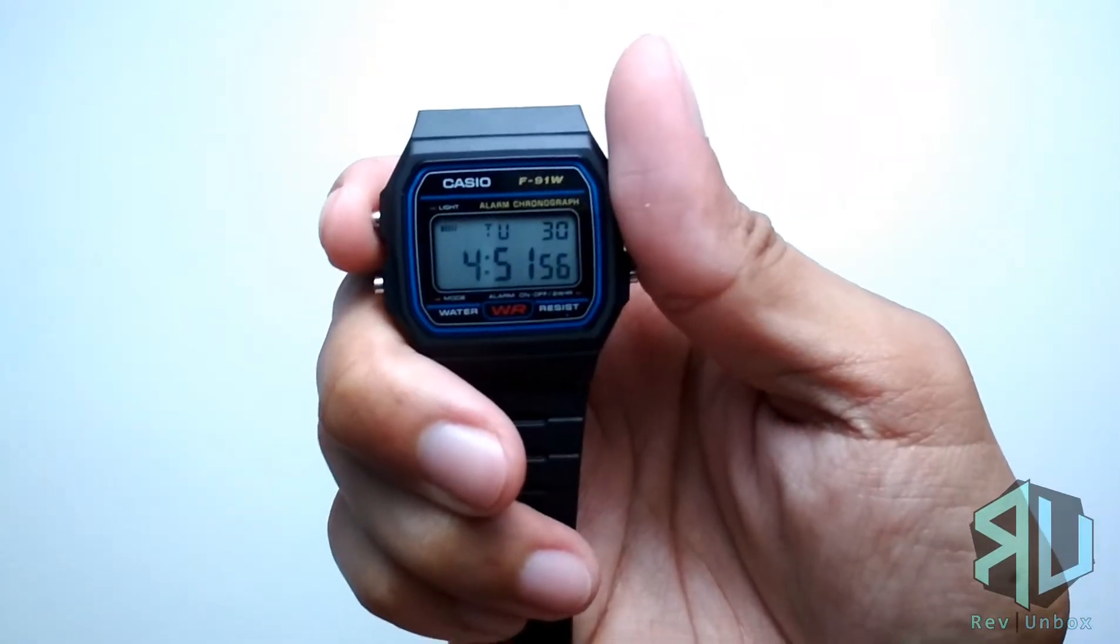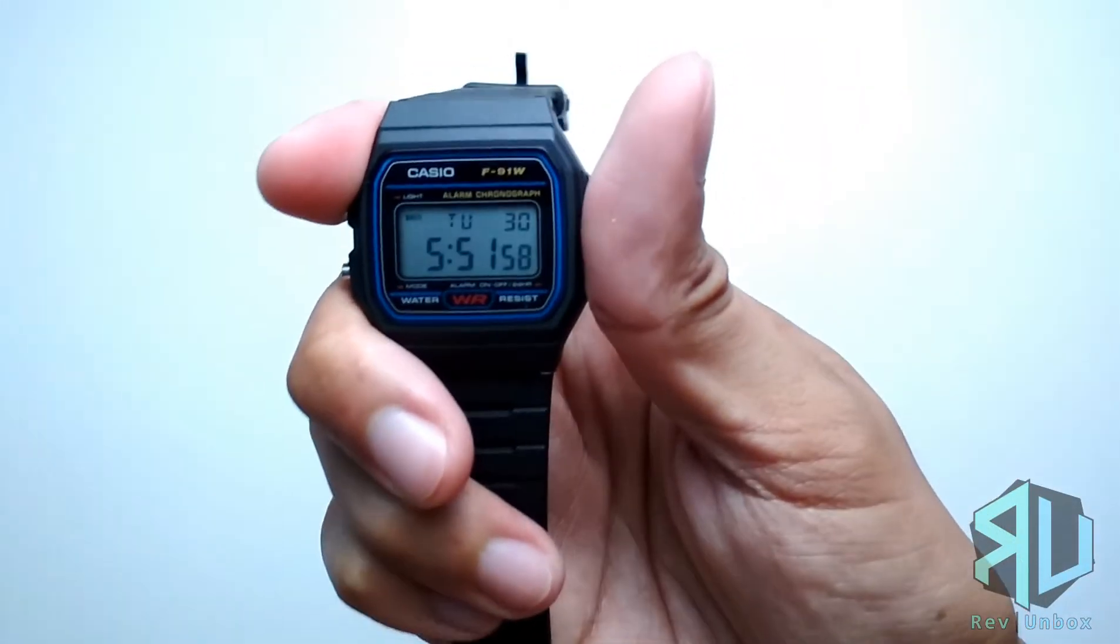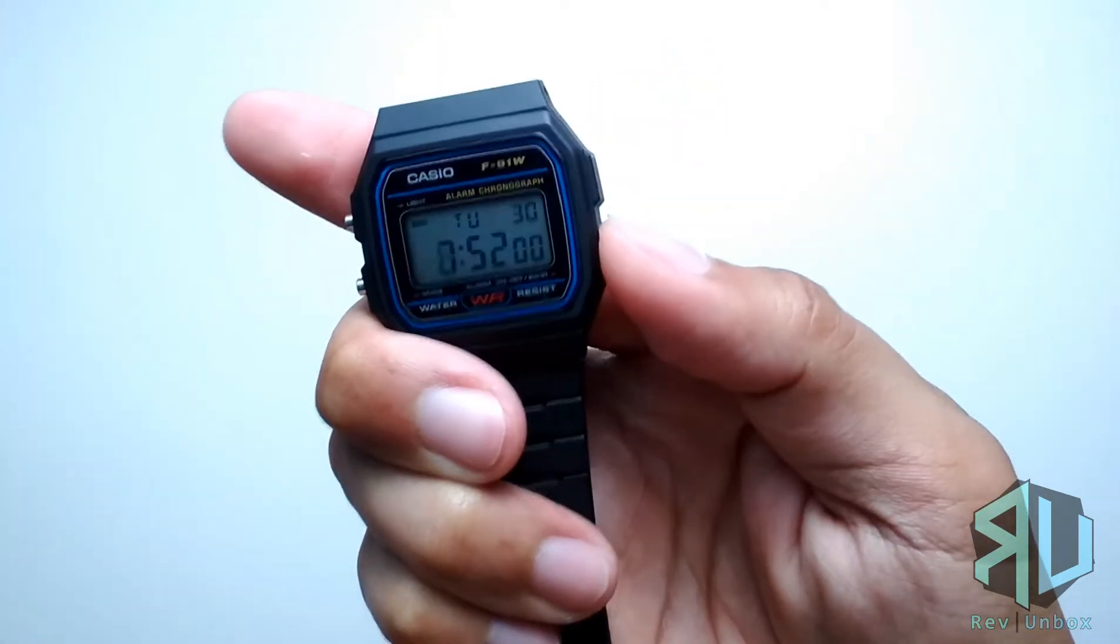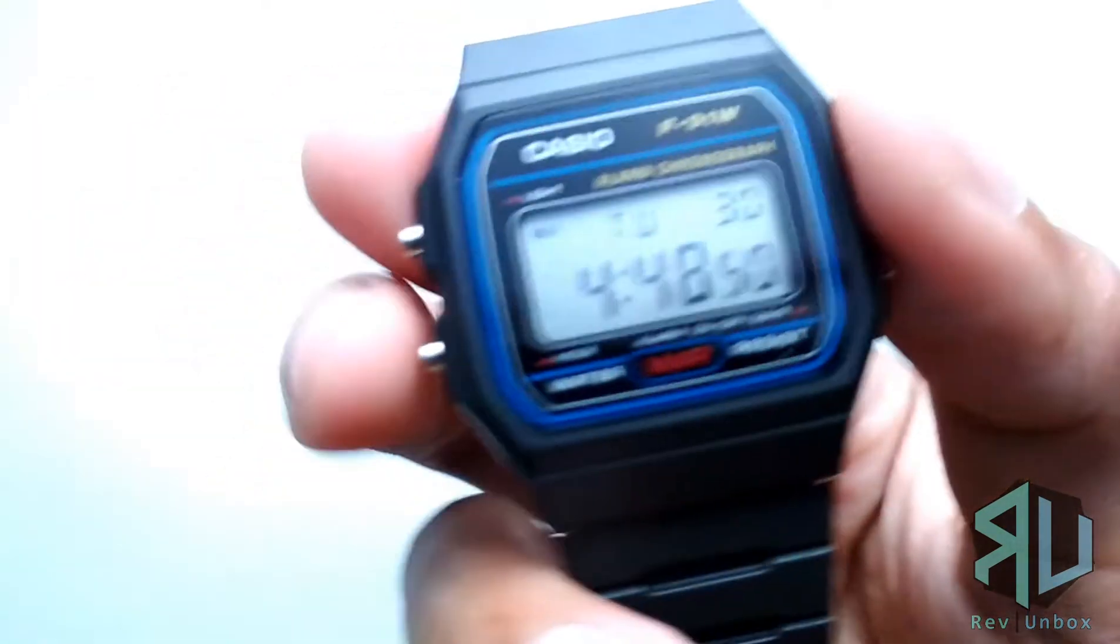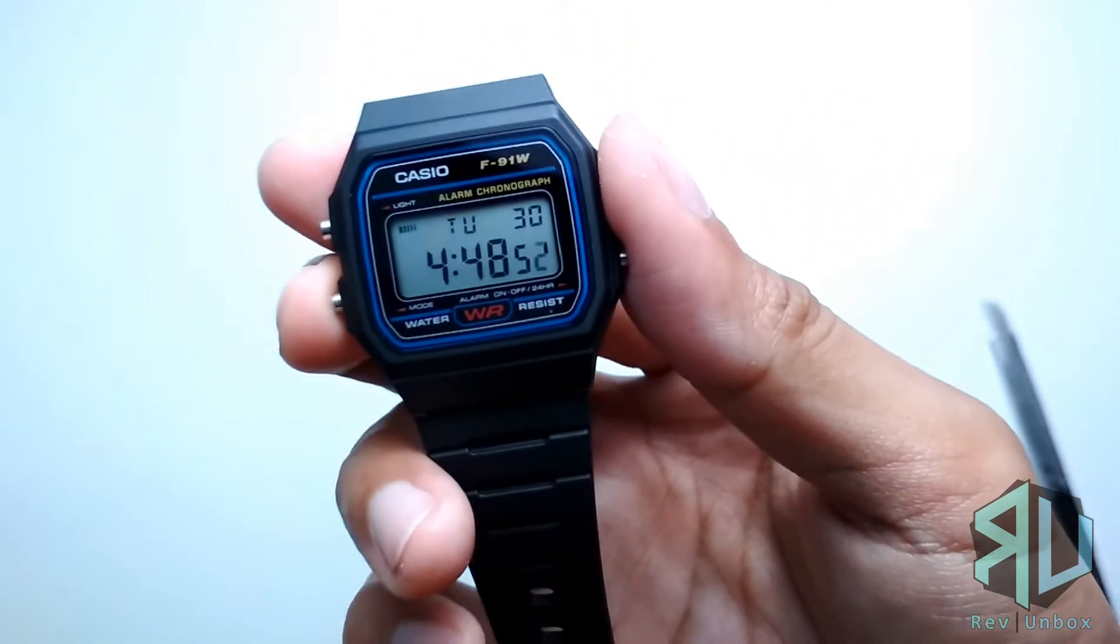Here you could set the date, day, and time. The watch also has an LED light at the left side. It is not that bright but just enough for you to see the display in the dark.